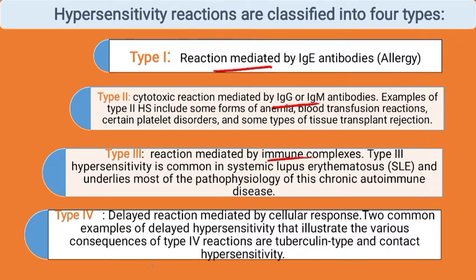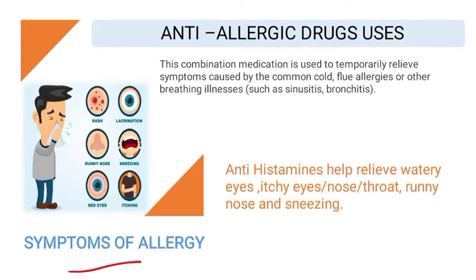Type 3 hypersensitivity is common in systemic lupus erythematosus and underlies most of the pathophysiology of chronic autoimmune diseases. Type 4 involves delayed reactions mediated by cellular response. Two common examples of Type 4 delayed hypersensitivity are the tuberculin type and contact hypersensitivity.